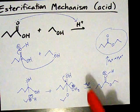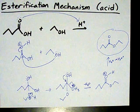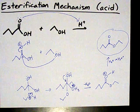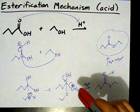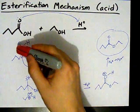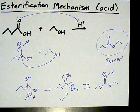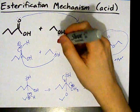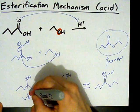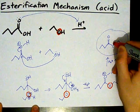Let's recap. First, protonate the carbonyl oxygen. Second, nucleophilic attack of the alcohol. Third, proton transfer from the alcohol to the OH group. Fourth, the OH group — which is now OH2 — leaves as water. And then remove the H+, which was really only there to activate the carbonyl group, resulting in your ester.